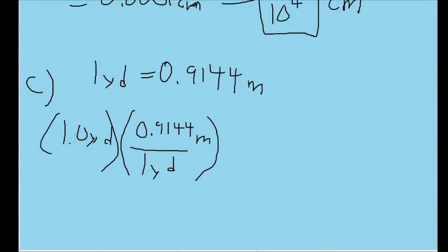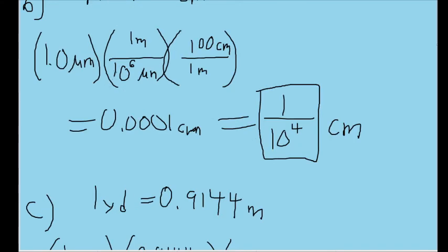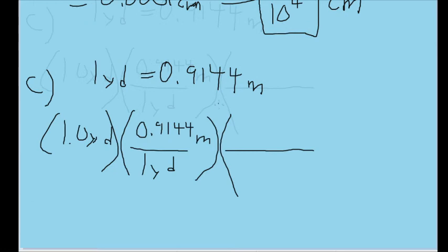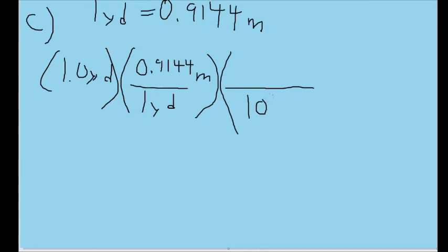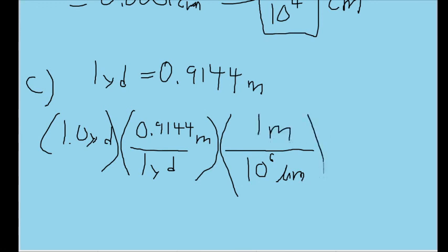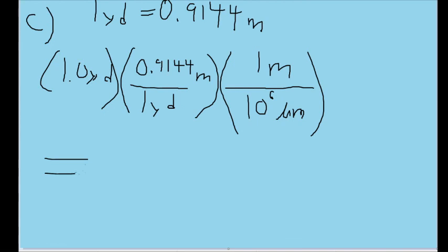Then we're converting that into microns. So let's add the conversion from microns to meters, as we did in part B. I'll put 10^6 microns in the numerator and 1 meter in the denominator. Then plugging this into our calculator and doing this calculation, we find that 1 yard is equal to...